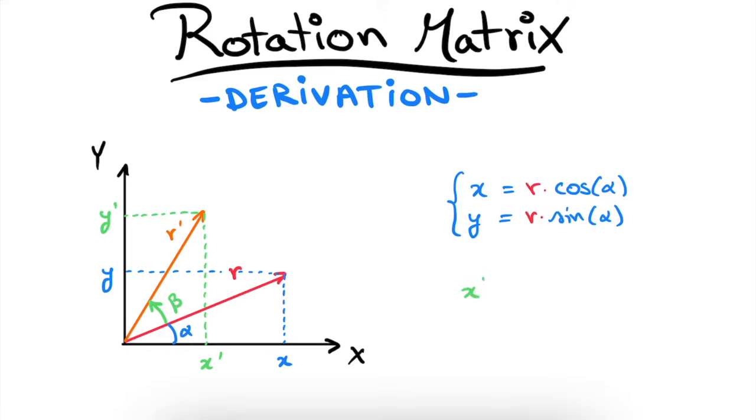Likewise we can write x prime as being equal to r prime times cosine of alpha plus beta, and we can write y prime equal to r prime times sine of alpha plus beta. What we now try to find is an expression for x prime and y prime, so the coordinates of our rotated vector r prime as a function of the initial coordinates x and y.